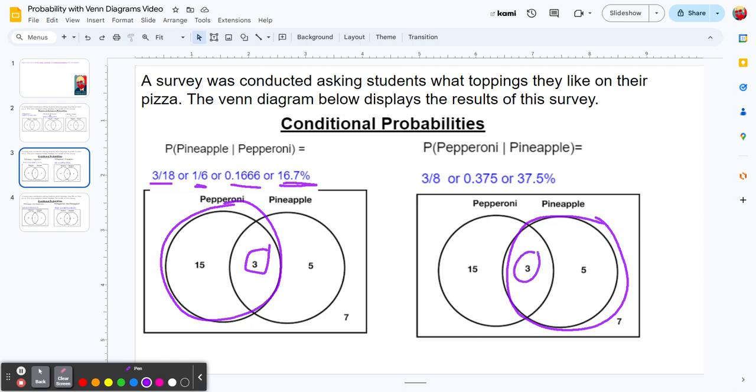That's the 3. So we get 3 out of 8, which is 0.375 or 37.5%. See the subtle difference between these two problems? It's all based on the condition.